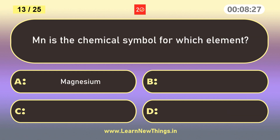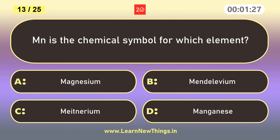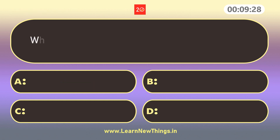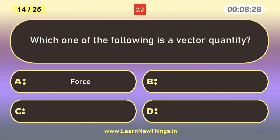Mn is the chemical symbol for which element? Manganese. Which one of the following is a vector quantity?